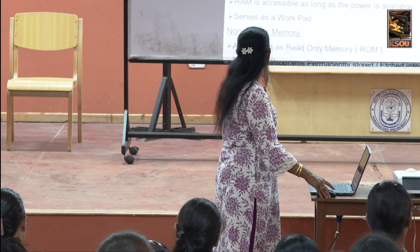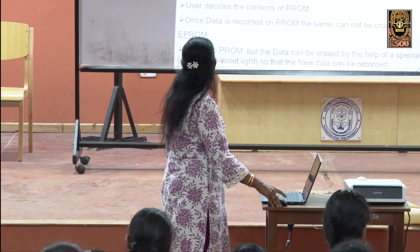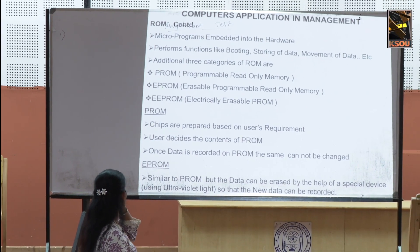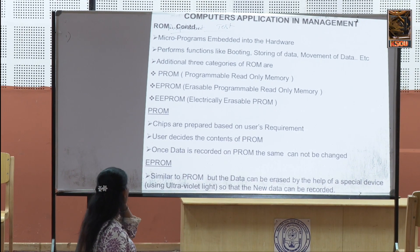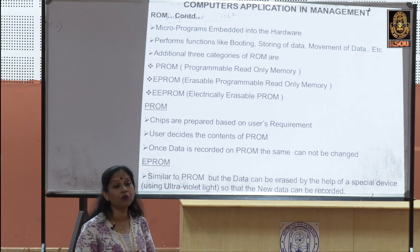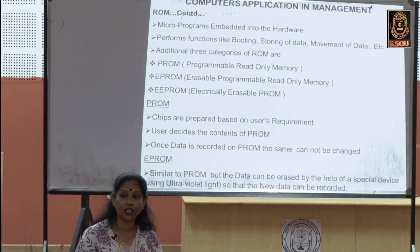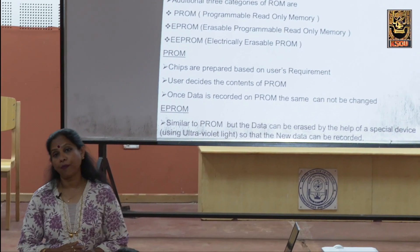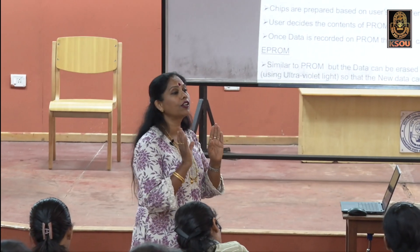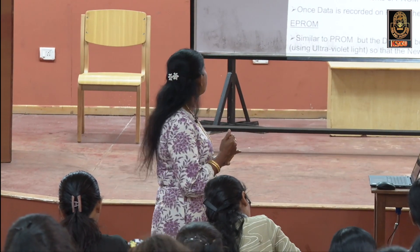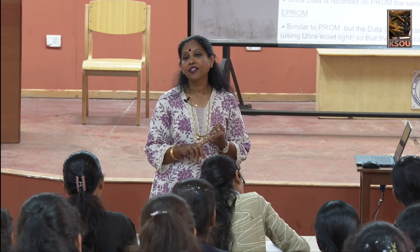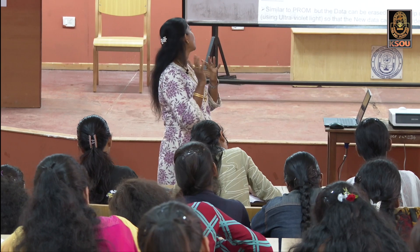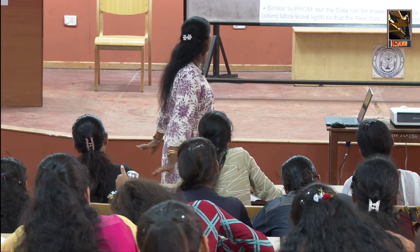In ROM, you have three additional categories: PROM, EPROM, and EEPROM. This ROM performs booting, storing of data, and movement of data. Write these three types down: PROM (P-R-O-M), EPROM (E-P-R-O-M), and EEPROM (E-E-P-R-O-M).